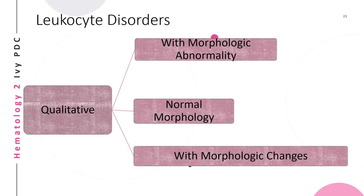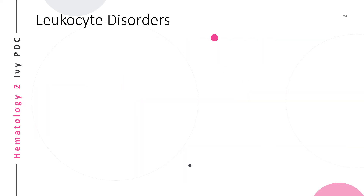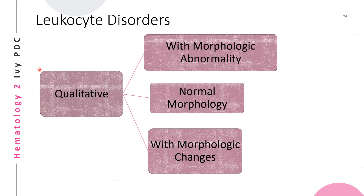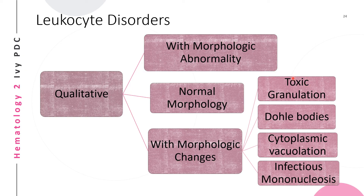For the second qualitative characteristic — normal morphology — we have chronic granulomatous disease and leukocyte adhesion disorders. The last qualitative leukocyte disorder category is morphologic changes present in the disorder; examples include toxic granulation, Döhle bodies, cytoplasmic vacuolation, and infectious mononucleosis.